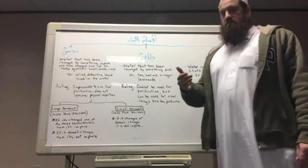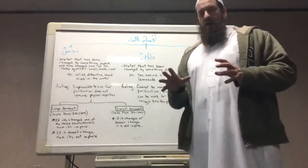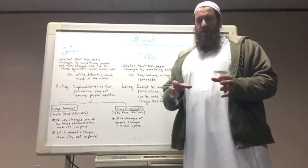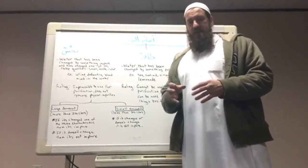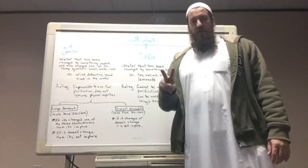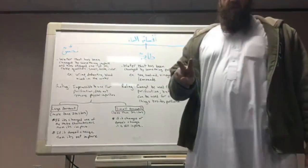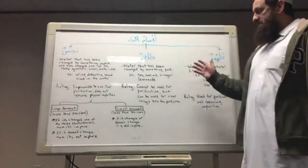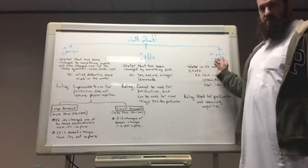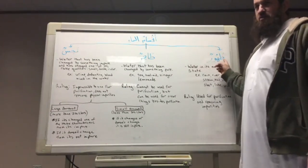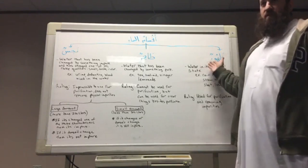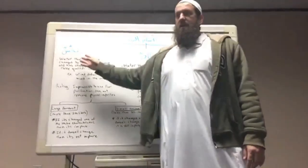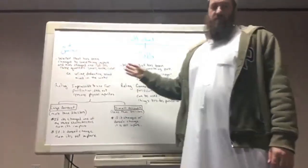There is some difference of opinion in regards to the number of categories of water. Some scholars only divide water into two categories, but we are going to take the opinion of the scholars who say that water is divided into three categories. The first category is Tuhur, the second category is Tahir, and the third category is Najas.